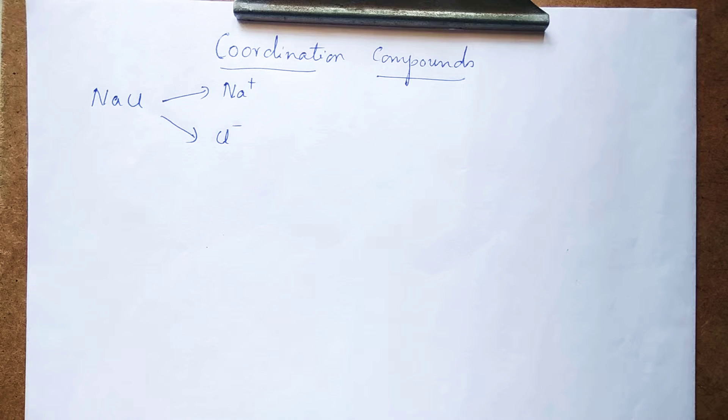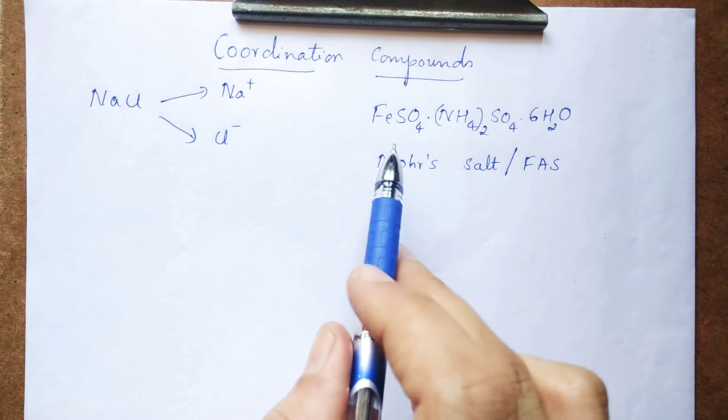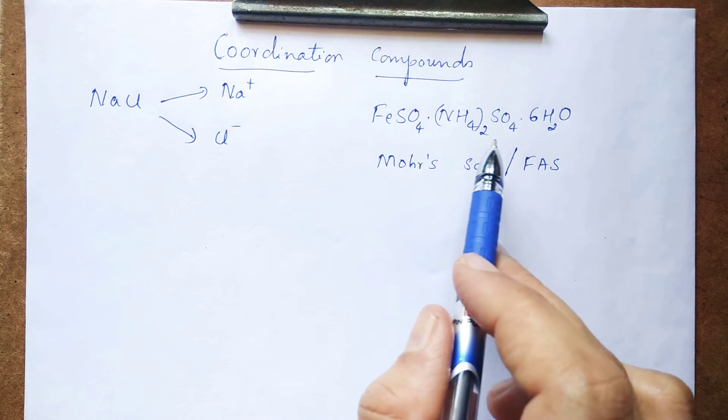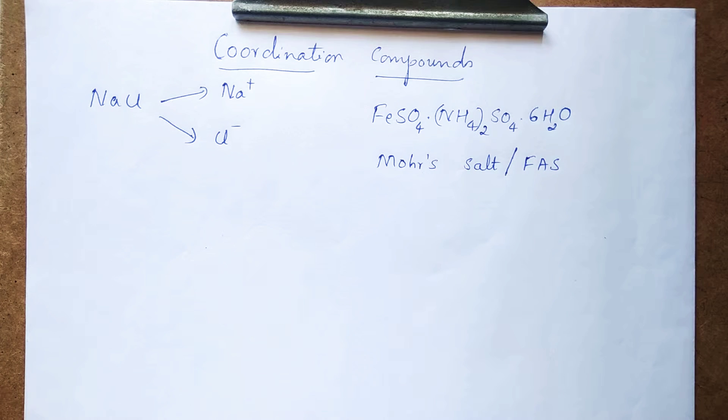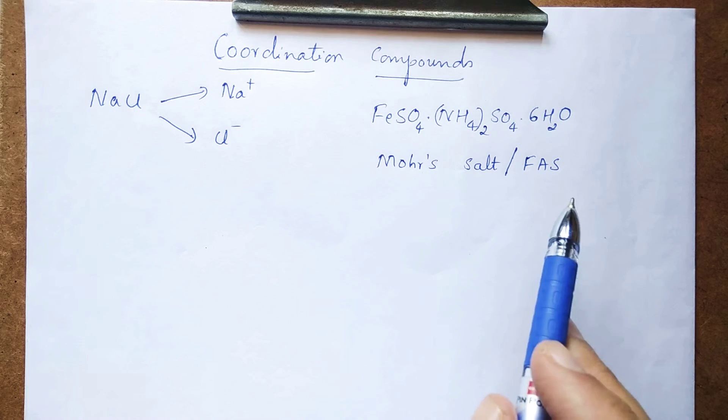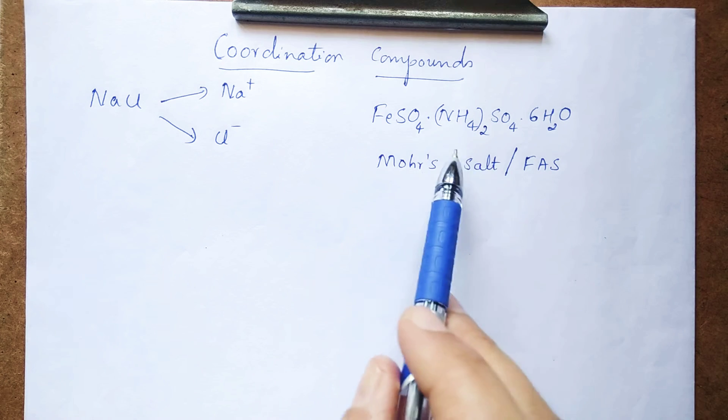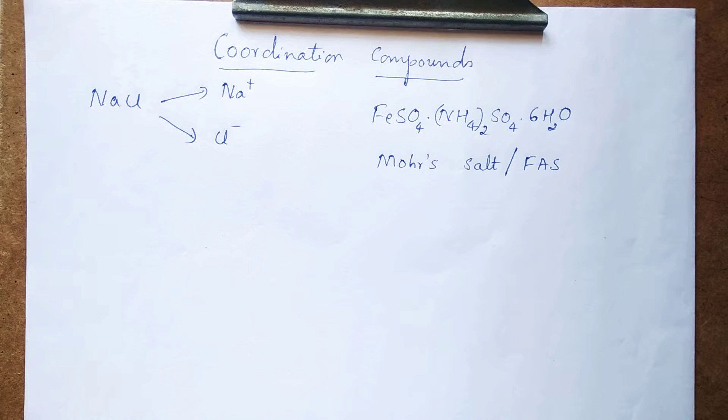Now there are classes of salts which are combinations of two simple salts and they are called double salts. Here we have an example for one such double salt: FeSO4(NH4)2SO4·6H2O. You might have used this double salt in your lab and its name is ferrous ammonium sulfate, or you can call it FAS or the other name is Mohr's salt. See, it is a combination of two simple salts, one is ferrous sulfate, the other one is ammonium sulfate.